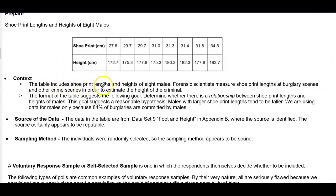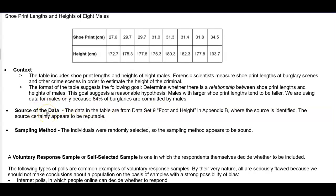The context tells us the following. Creating the table includes shoe print lengths and heights of eight males. Forensic scientists measure shoe print lengths at burglary scenes and other crime scenes in order to estimate the height of the criminal. The format of the table suggests the following goal: determine whether there is a relationship between the shoe print lengths and the height of males. This goal suggests a reasonable hypothesis. Males with larger shoe print lengths tend to be taller. We are using data for males only because 84% of burglaries are committed by males.